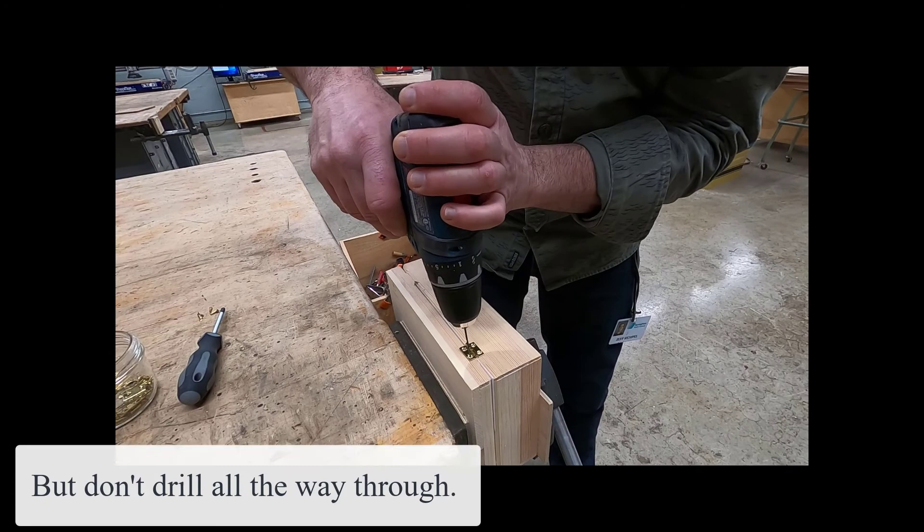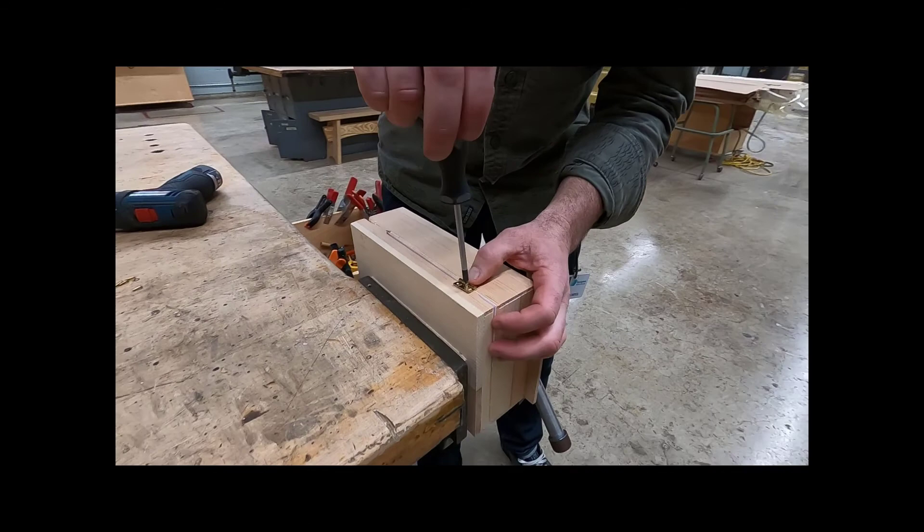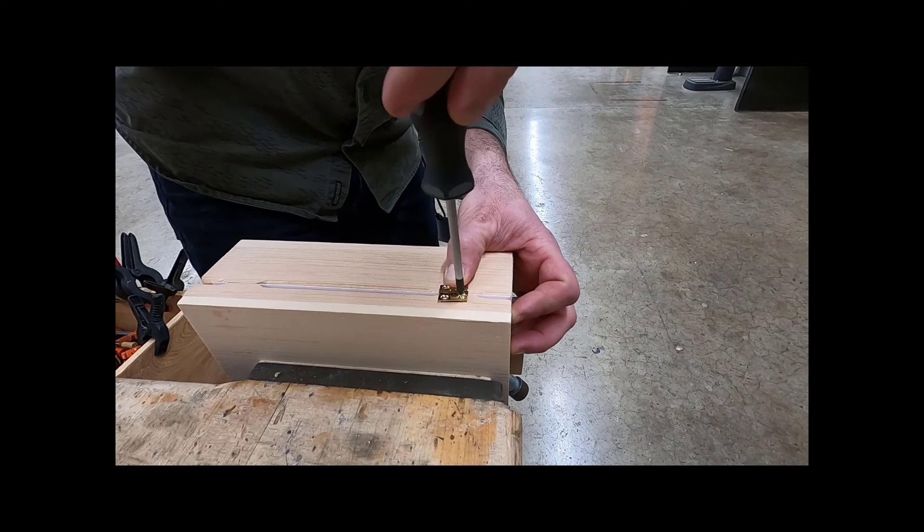Once you drill a hole, immediately attach a screw into the hole that you just drilled. That's drilling one hole and immediately attaching one screw at a time. If you start on the top, then attach all four screws into the top of your project.